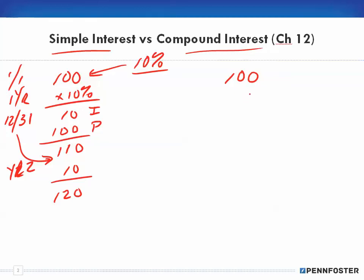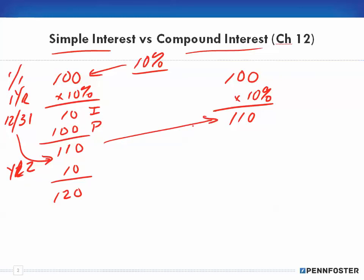With compound interest, during year one we still get ten percent on the principal, which ends up being $110 — just like we did under simple interest. However, with compound interest, what we're getting now is interest on interest, not just interest on principal.